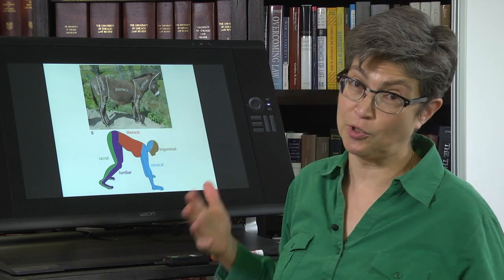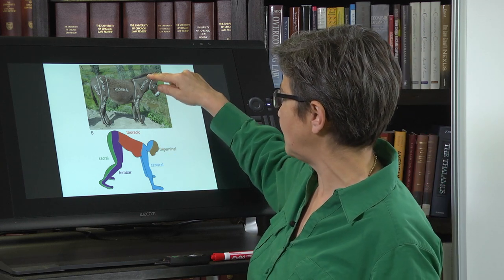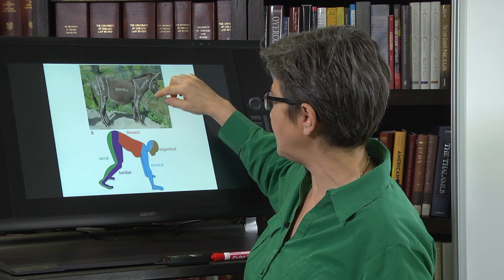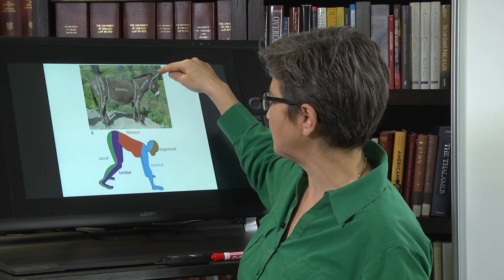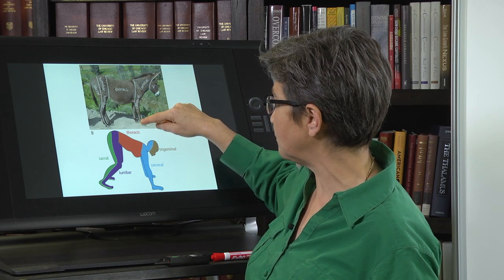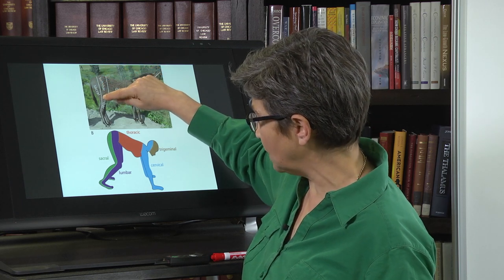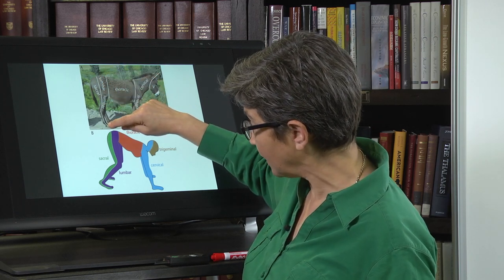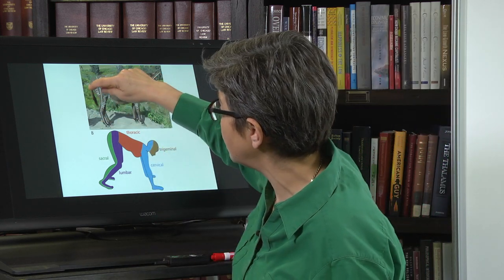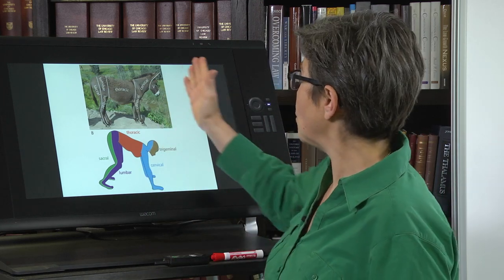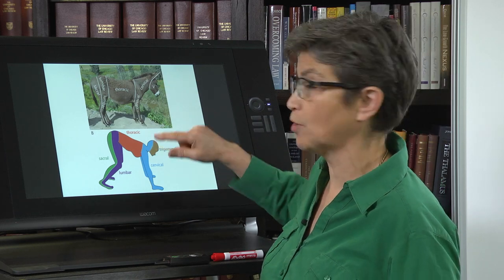We descended from quadrupeds. So in a quadruped, it's quite clear that the face and the front part of the ear is in front of the back of the ear, the neck, and the forelimbs. Then there's this trunk area, then the front of the legs, then the back of the legs and the perineum. And in some animals, there's a tail. So we stood up, but we still have this same organization.